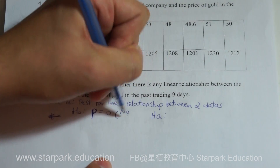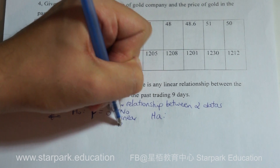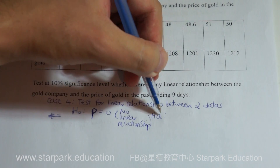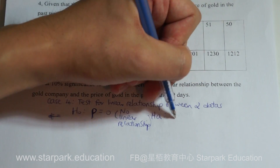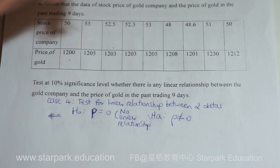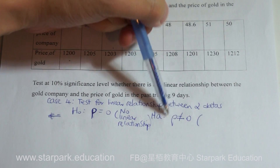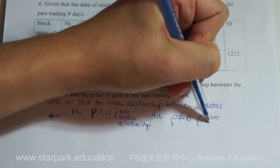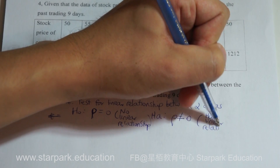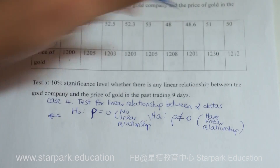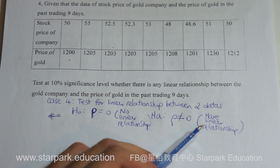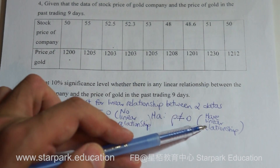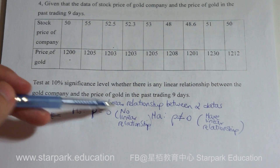If the correlation coefficient is zero, that means there is no linear relationship. For the alternative hypothesis, rho is not equal to zero — meaning we do have a linear relationship. We don't care whether it is positive or negative; we only care whether a relationship exists or not.